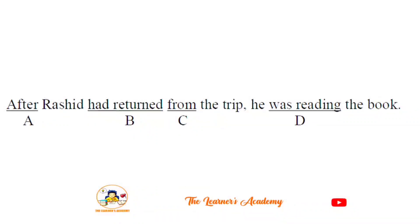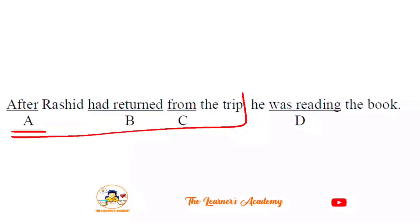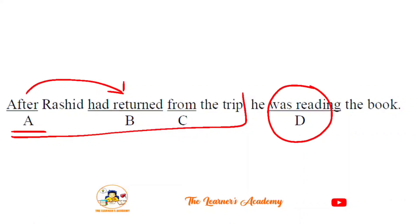Sentence: 'After Rashid had returned from the trip, he was reading the book.' The error is in option D — 'was reading' is incorrect. After 'after' with past perfect in the first clause, the second clause should use simple past. The corrected sentence is: 'After Rashid had returned from the trip, he read the book.' The past perfect establishes the earlier action, and simple past follows.